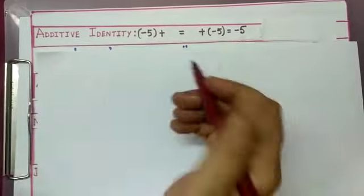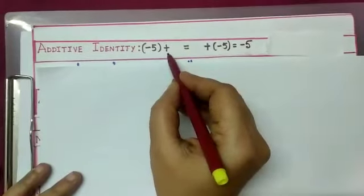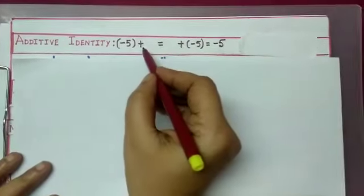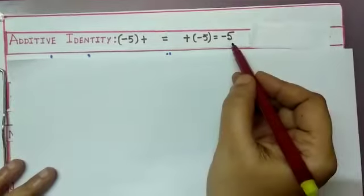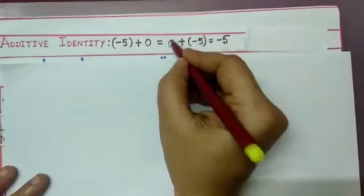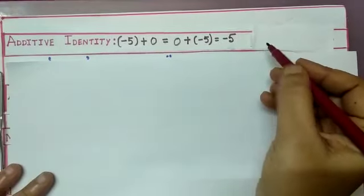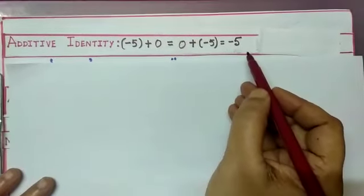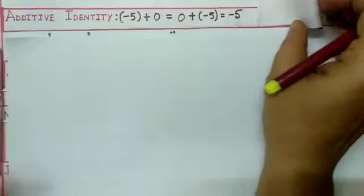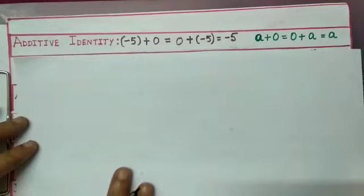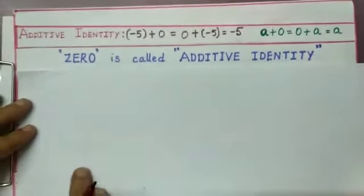Now let us learn some additional properties. First, additive identity: by adding which integer to minus 5 do we get minus 5 itself? It is 0. So minus 5 plus 0 equals 0 plus minus 5 equals minus 5. When any integer is added to 0, or 0 is added to any integer, we get the integer itself. This is called additive identity. In general, for any integer a, a plus 0 equals 0 plus a equals a. Here 0 is called the additive identity.